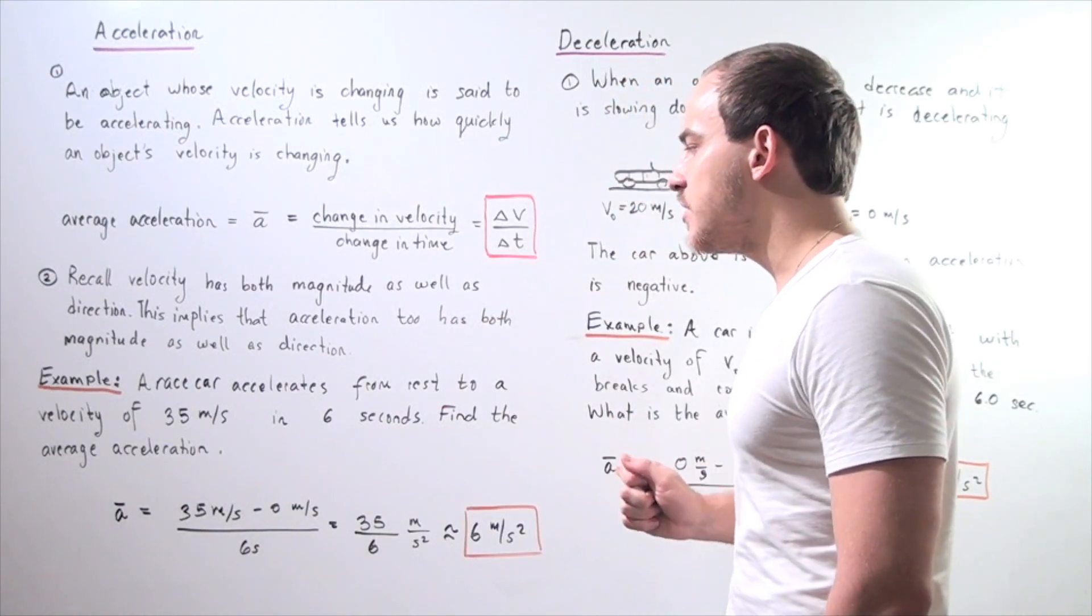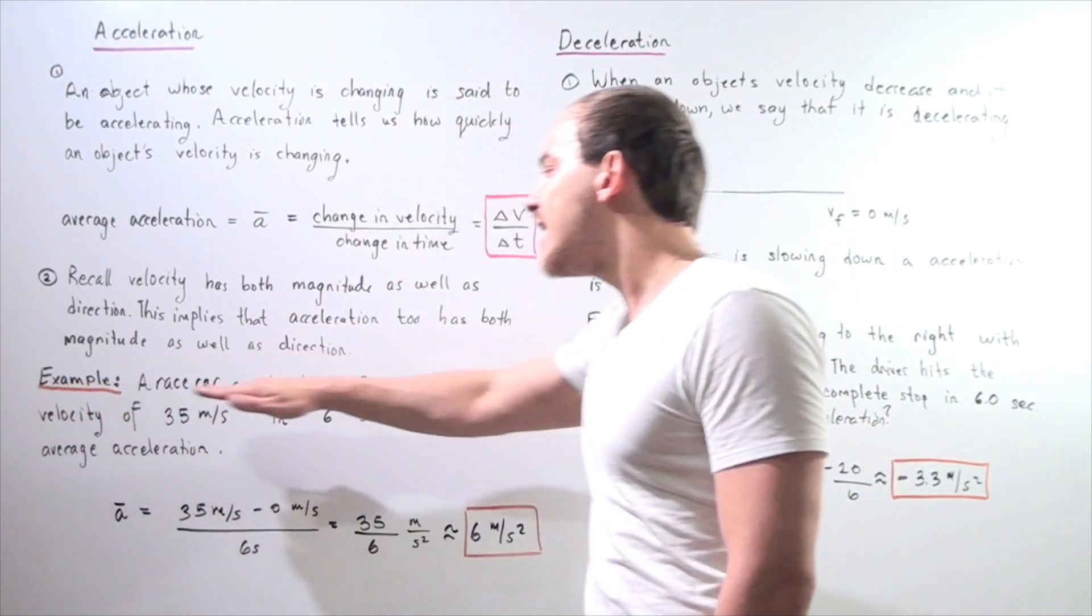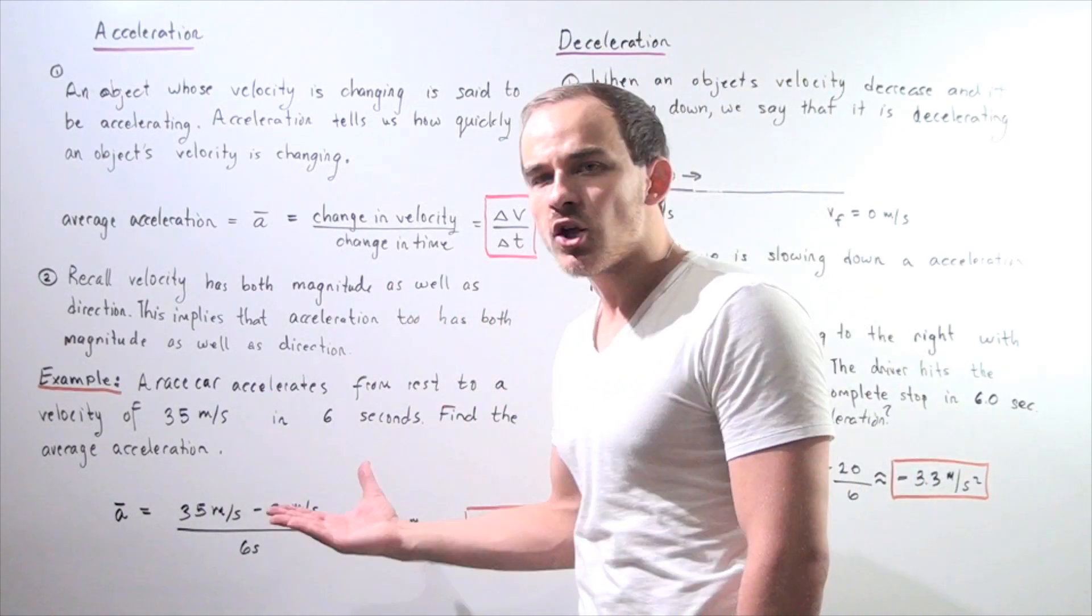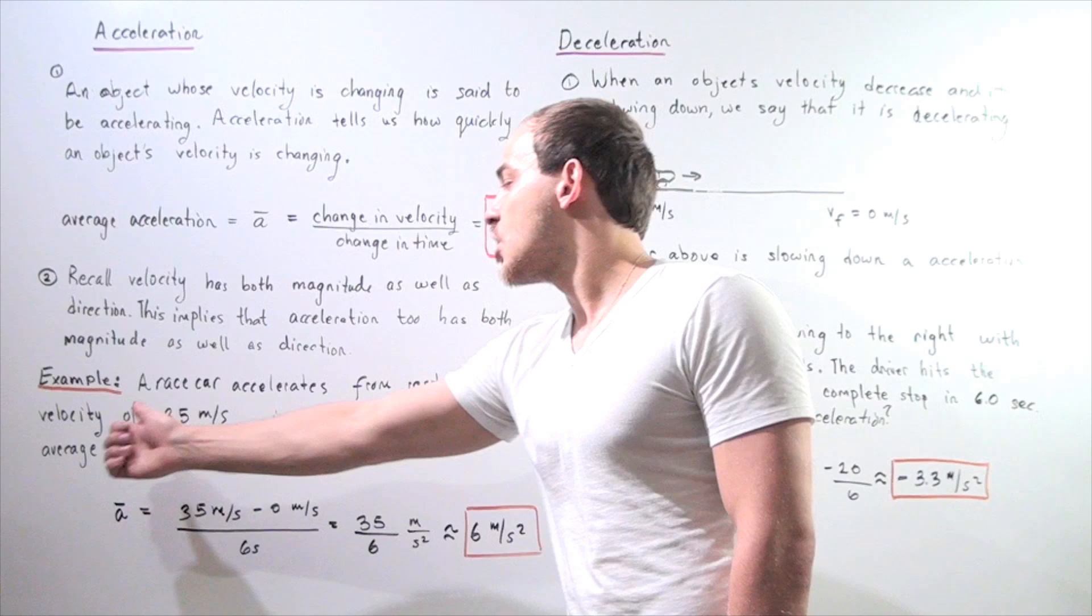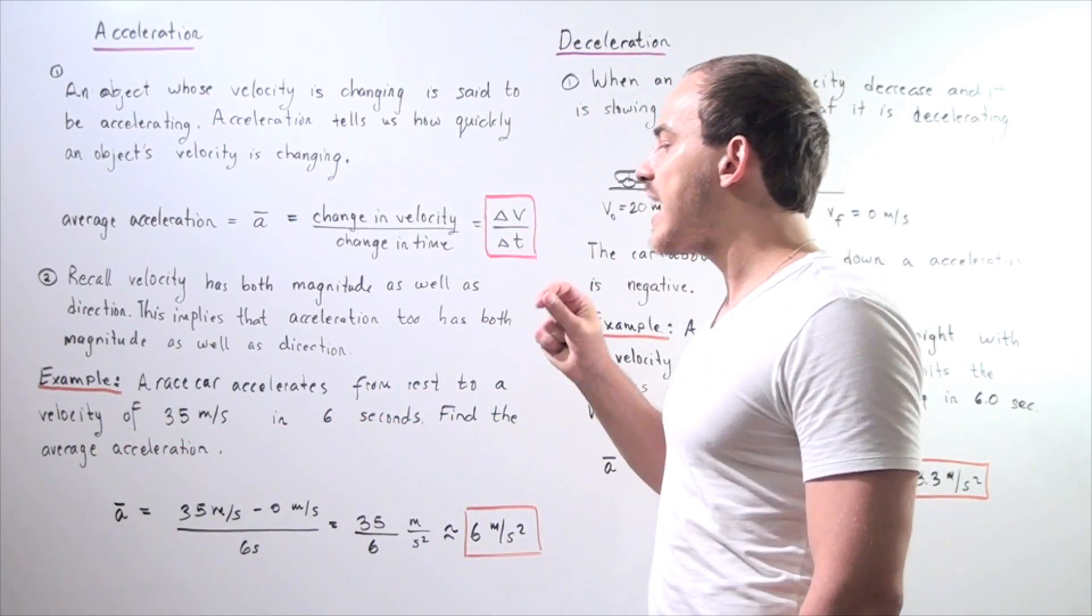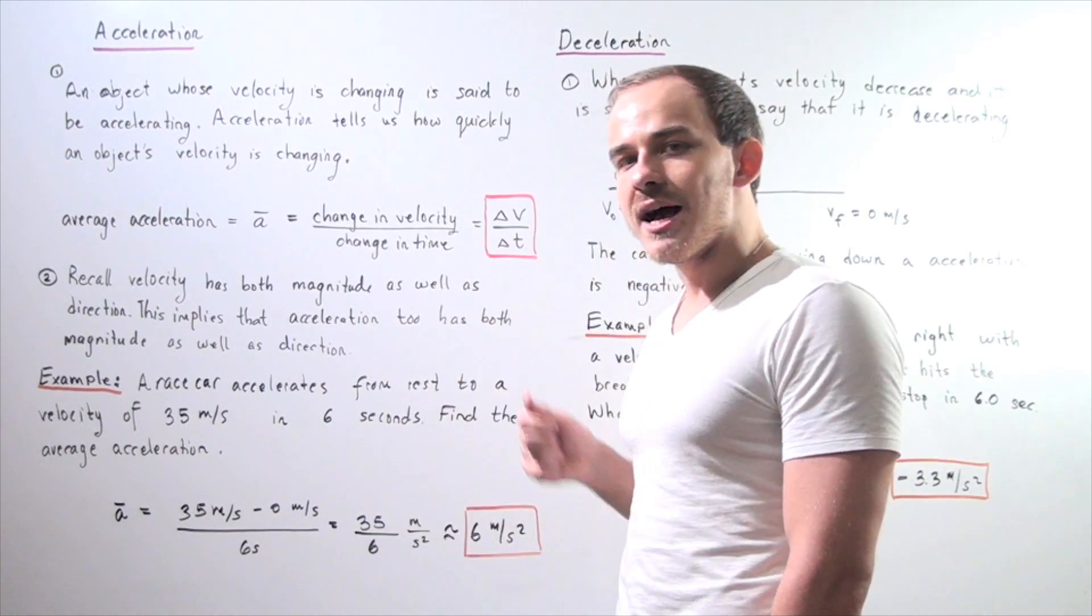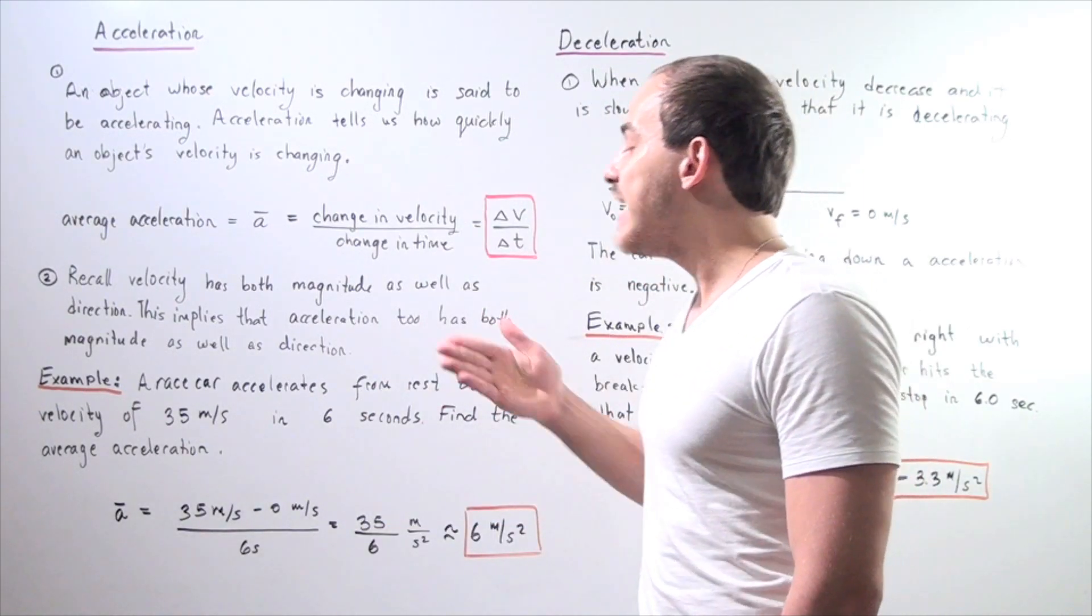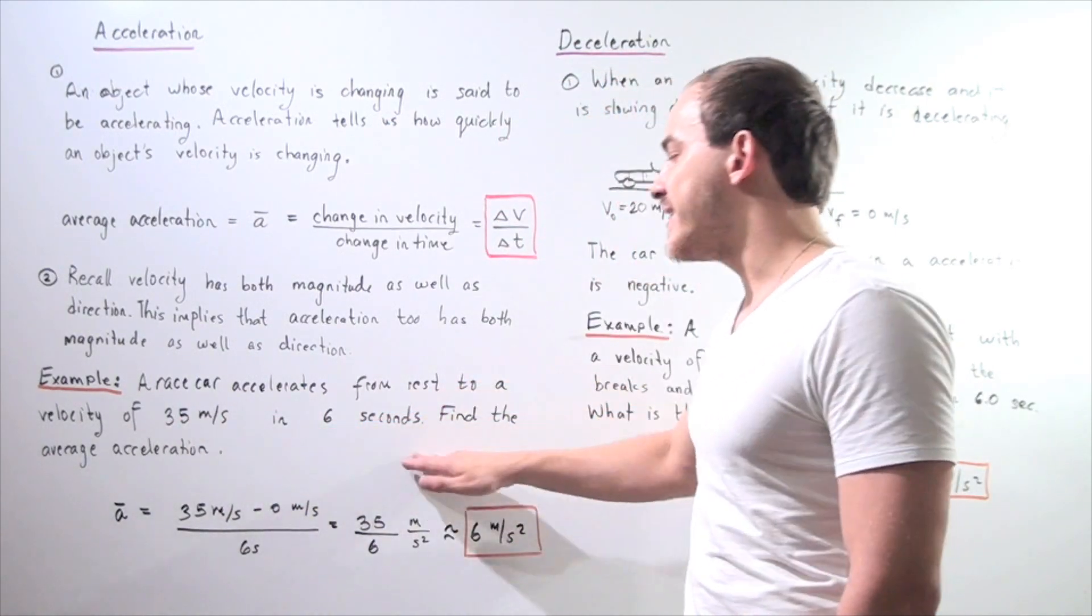Let's make the assumption that our race car is moving along the x axis in the positive direction, so it's accelerating in the positive direction. Our velocity is along the x axis toward the right. What is our magnitude? Well, what's our initial velocity and final velocity? Initial is zero and final is 35 meters per second. Our time period is 6 seconds.